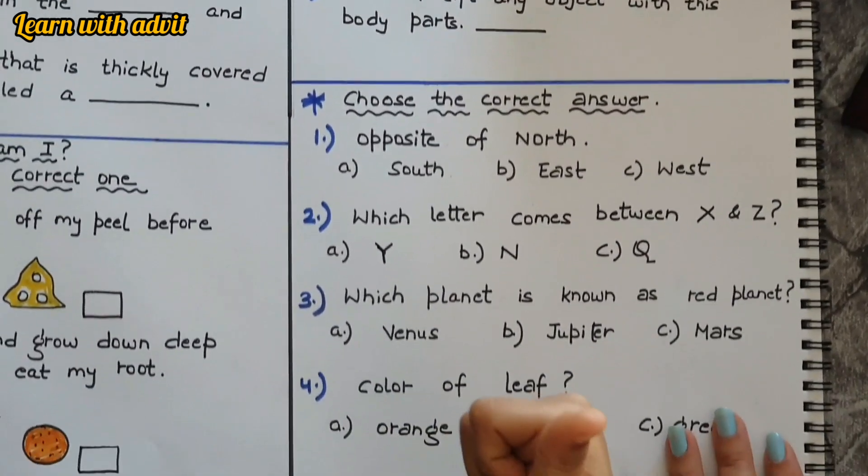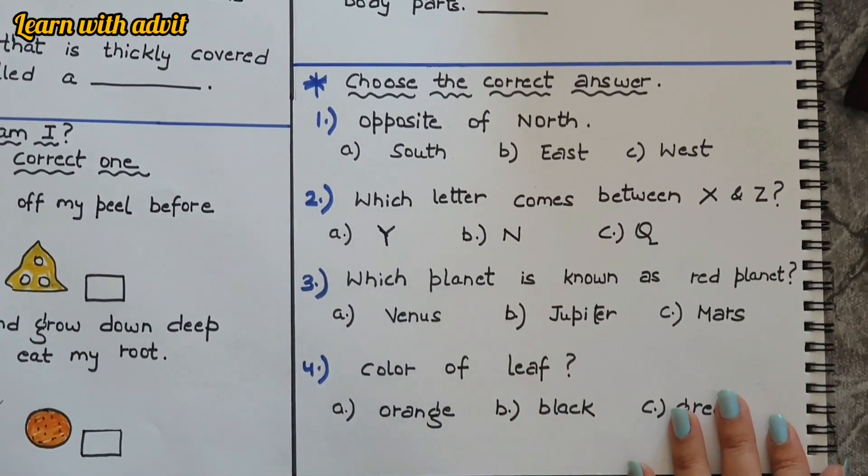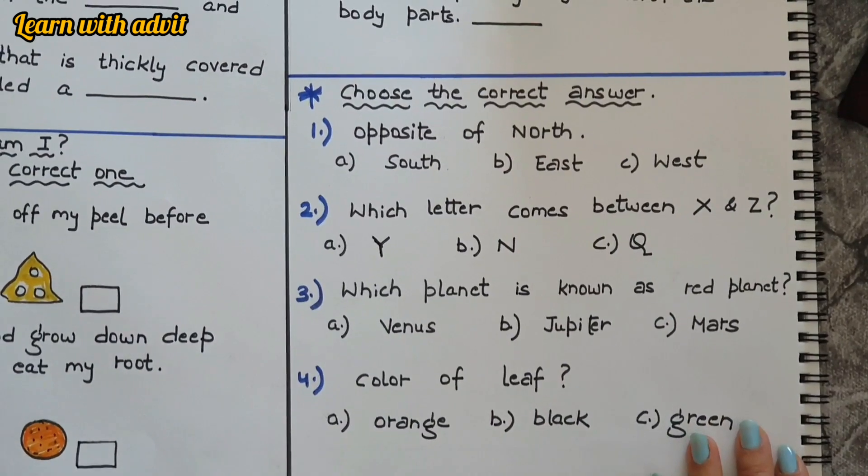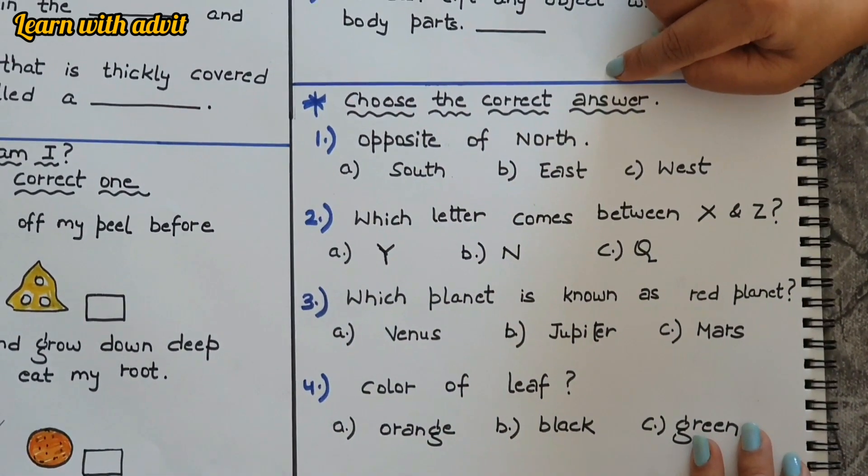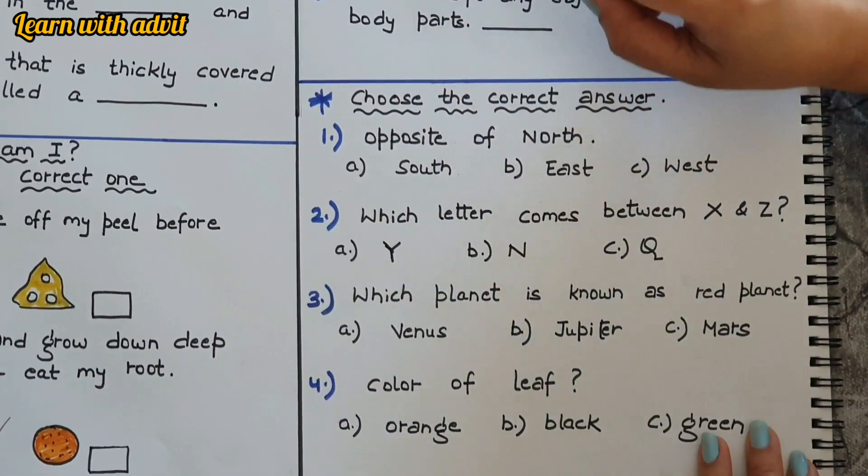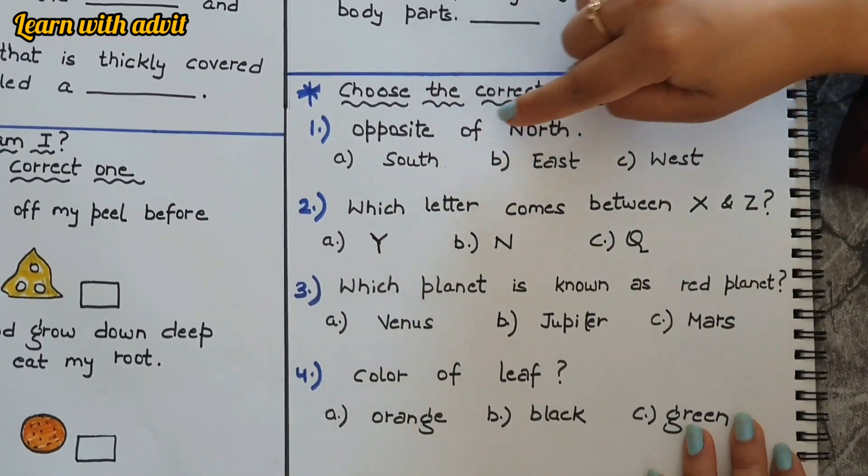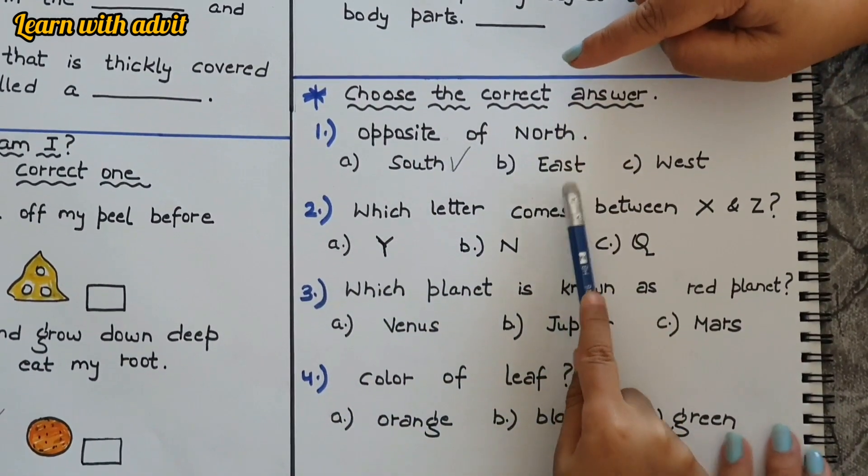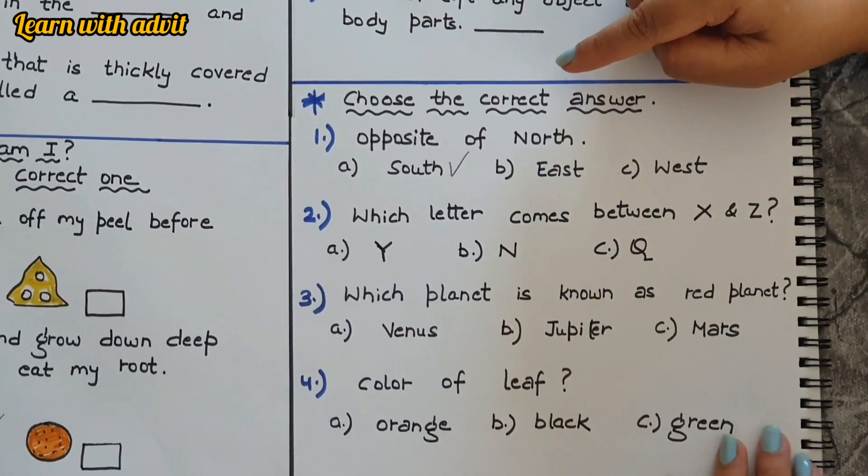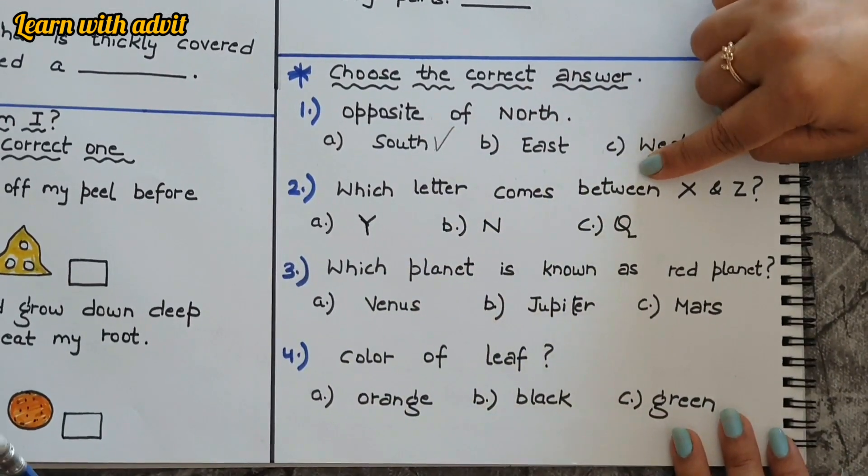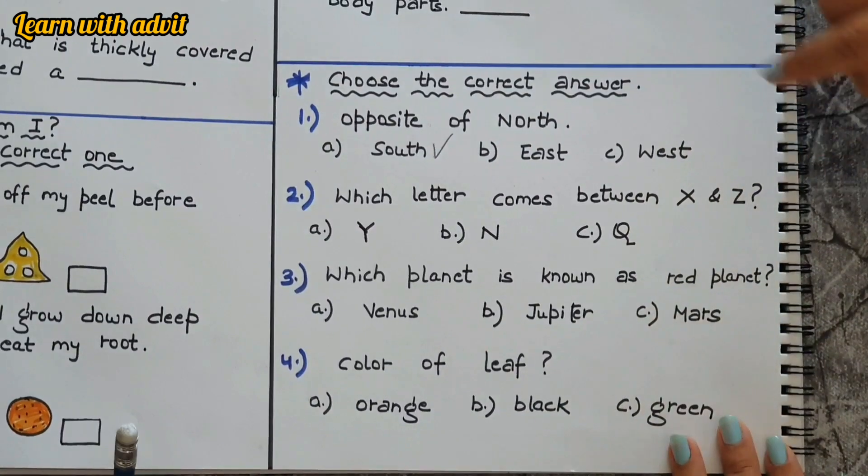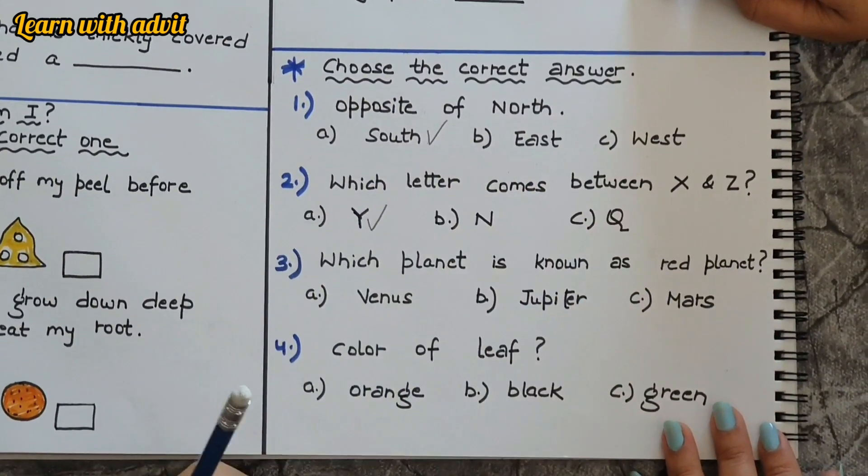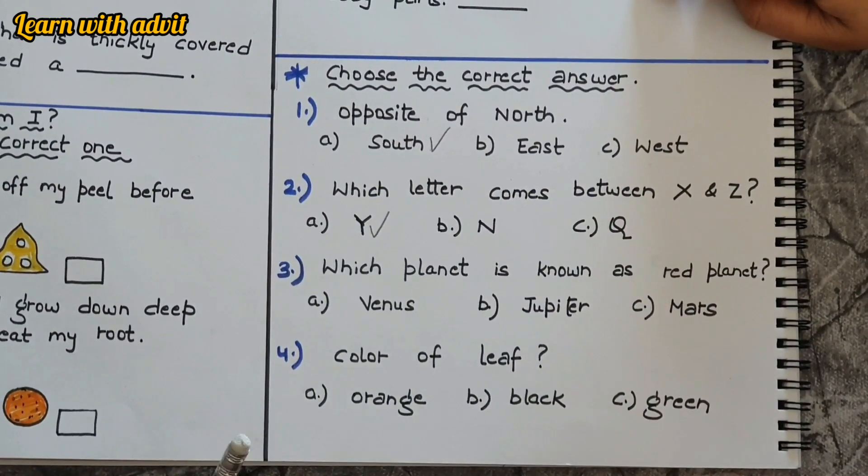How many senses do we have? Five. We can smell, we can see, we can touch, we can taste, and we can hear. Very good. Choose the correct answer. We have to choose the correct answer from the options. Opposite of north is south, and opposite of east is west. Very good. Which letters come between X and Z?